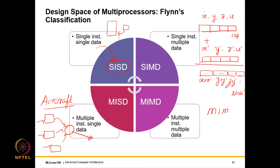What we are most interested in is MIMD — Multiple Instructions, Multiple Data. In this case, the instruction streams are different across multiple threads; even if compiled from the same C code, the threads are not running in lockstep and could be executing different instructions on different parts of data. MIMD is the broad umbrella we will be looking at.